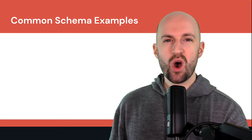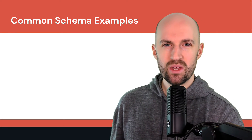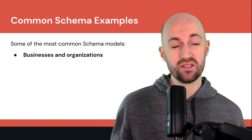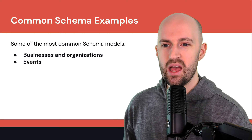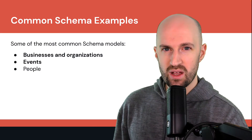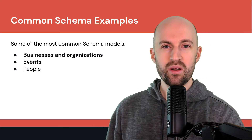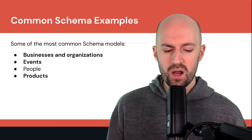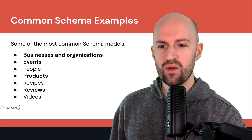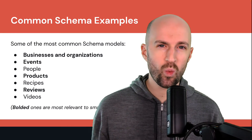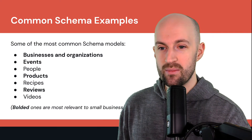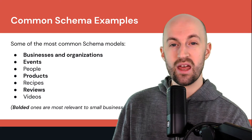So what are some common schema types that you could use as a small business? Well, businesses and organizations — definitely applicable to small businesses. Events, people (so if you hire a public figure, a celeb, or even an influencer), products, recipes, reviews, videos — all of that information. I've bolded the ones most likely relevant for small businesses, however some may also apply — for example, recipes if you're a restaurant.